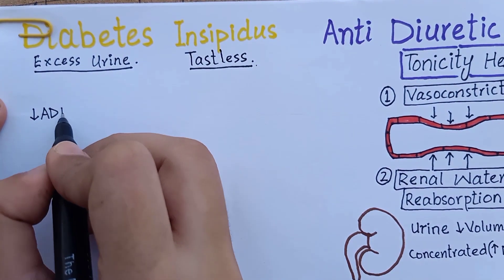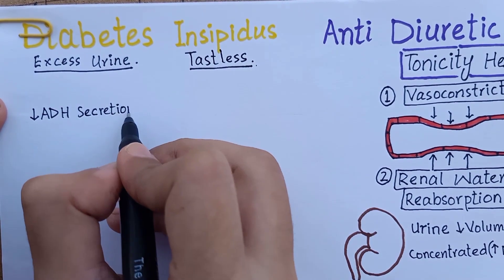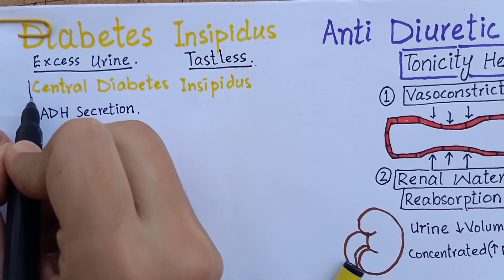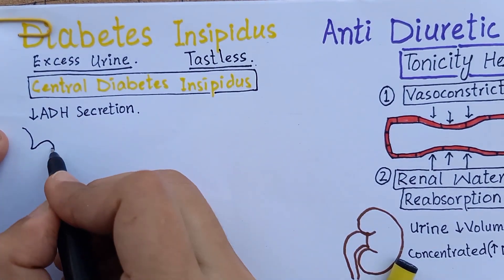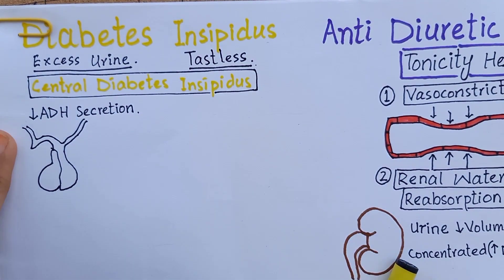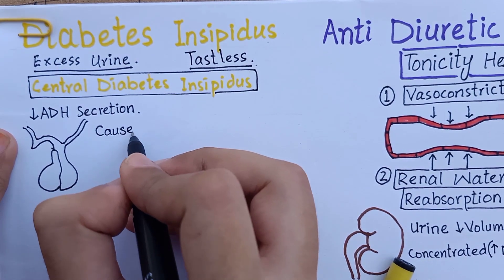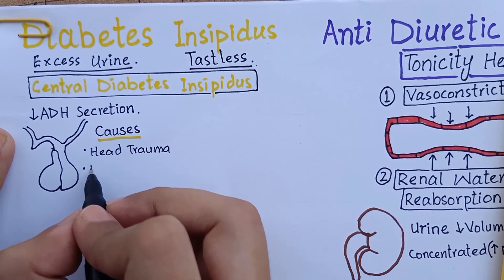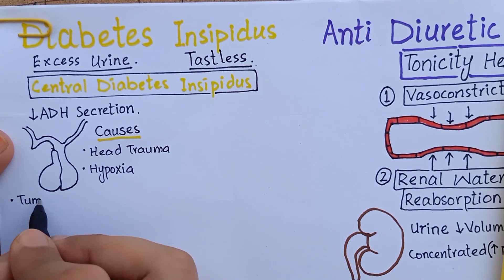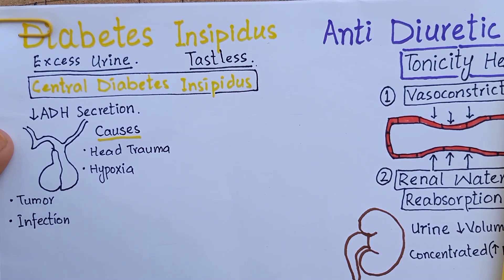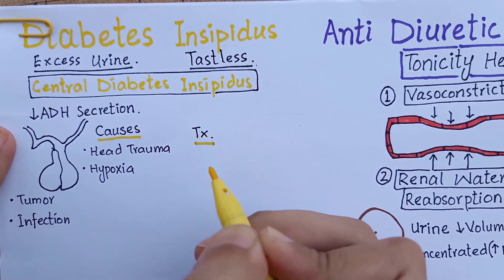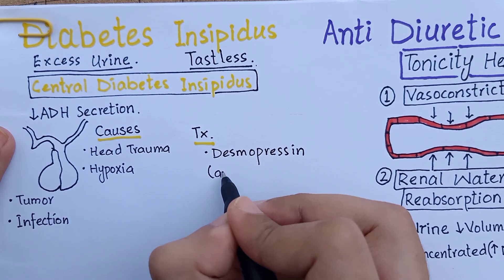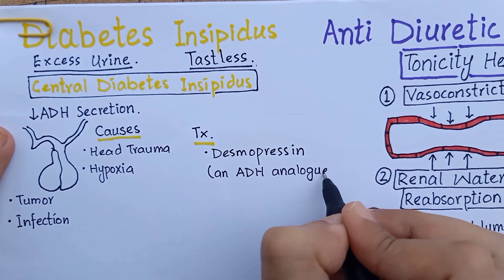Coming back to diabetes insipidus: there is either a decrease in production and release of ADH, categorized as central diabetes insipidus, or there is resistance to ADH action, known as nephrogenic diabetes insipidus. The causes of central diabetes insipidus can be idiopathic or a brain injury due to trauma, hypoxic brain injury, a tumor, or any other infiltrative disease. The treatment of central diabetes insipidus is administration of desmopressin, a synthetic analog of ADH, which can be given orally, by injection, or as a nasal spray.